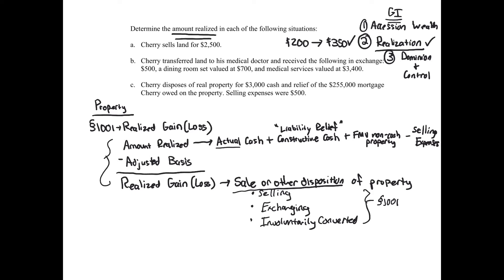In situation A, Cherry sells land for $2,500. Looking at our four parts: actual cash is $2,500 — it's implied to be cash. Liability relief is zero. Fair market value of non-cash property is zero. Selling expenses are zero. So the amount realized in A equals $2,500.